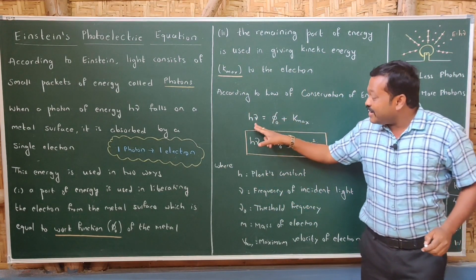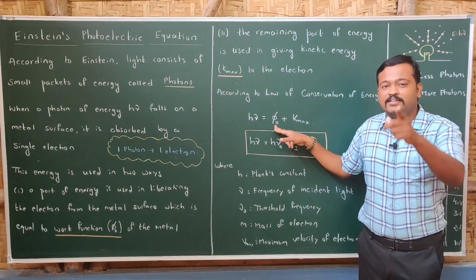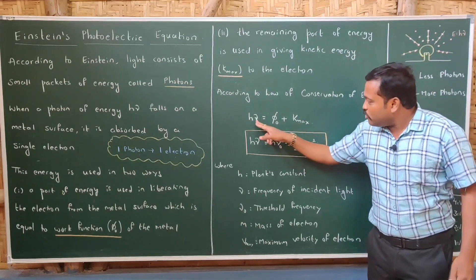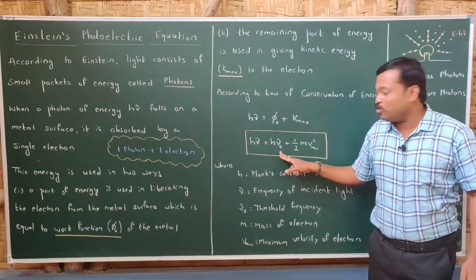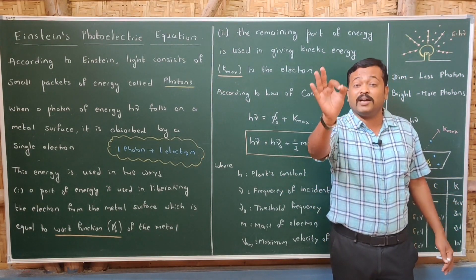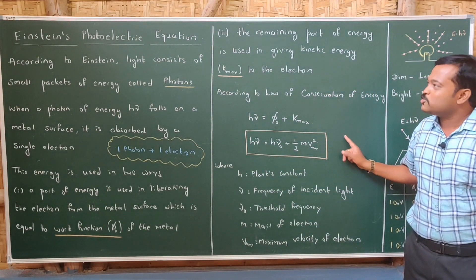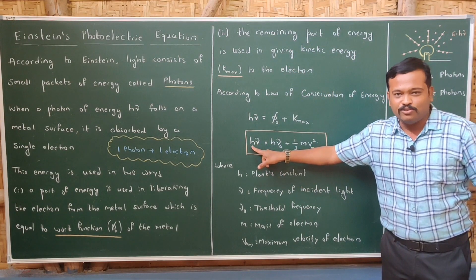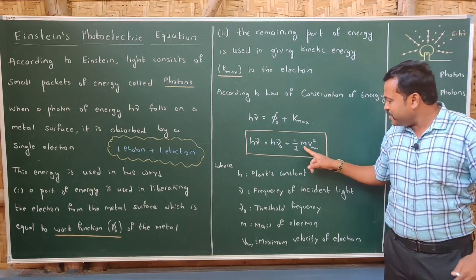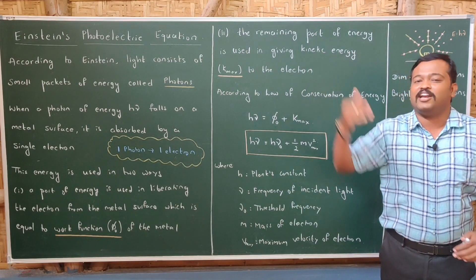According to the law of conservation of energy, light of energy hν falls on the metal and is absorbed by the electron, which uses it in two ways: to come out of the metal (work function φ = hν₀) and to move forward (maximum kinetic energy = ½mv²_max). So: hν = hν₀ + ½mv²_max. This is Einstein's photoelectric equation. Here, h is Planck's constant, ν is the frequency of incident light, ν₀ is the threshold frequency, m is the mass of the electron, and v_max is the maximum velocity of the emitted electron.